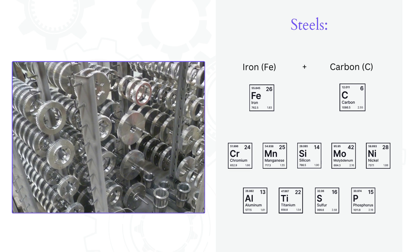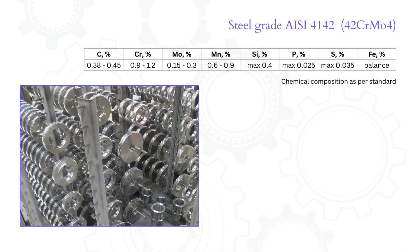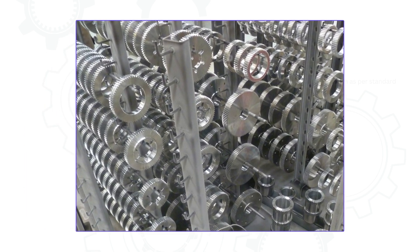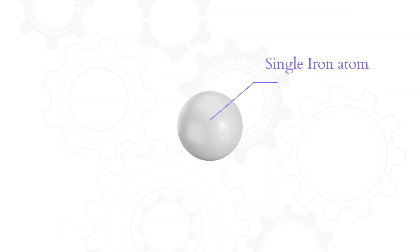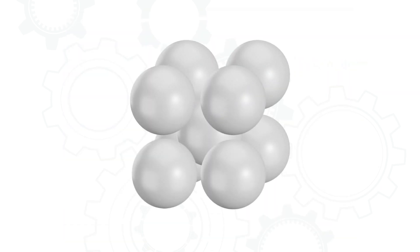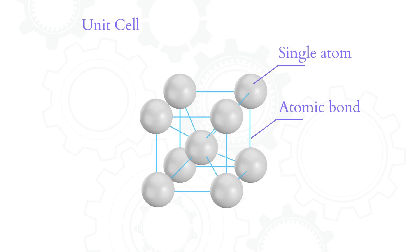These properties include strength, durability, machinability, corrosion resistance, and so on. The gears we will look into are made of steel grade AISI 4142 and they have some of the mentioned alloying elements. We will zoom in all the way to the atomic level and to a single atom. In steels, atoms are packed together closely, arranged in grid-like structures called crystal structures. Let us shrink the atoms to see the unit cell and the atomic bonds.